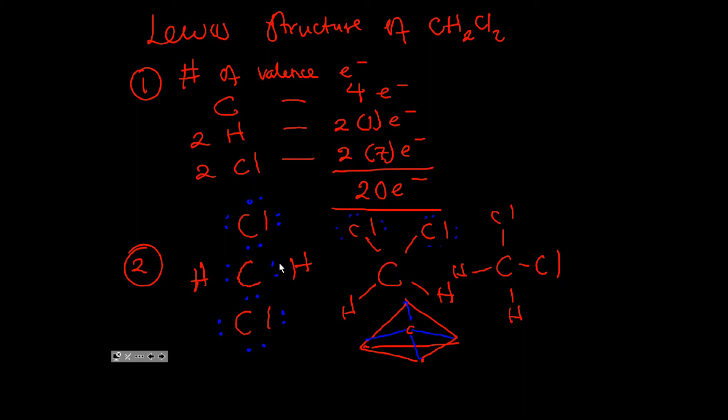All right, so that's the Lewis structure of dichloromethane. You can practice and find the Lewis structure of carbon tetrachloride. It should be similar to this.